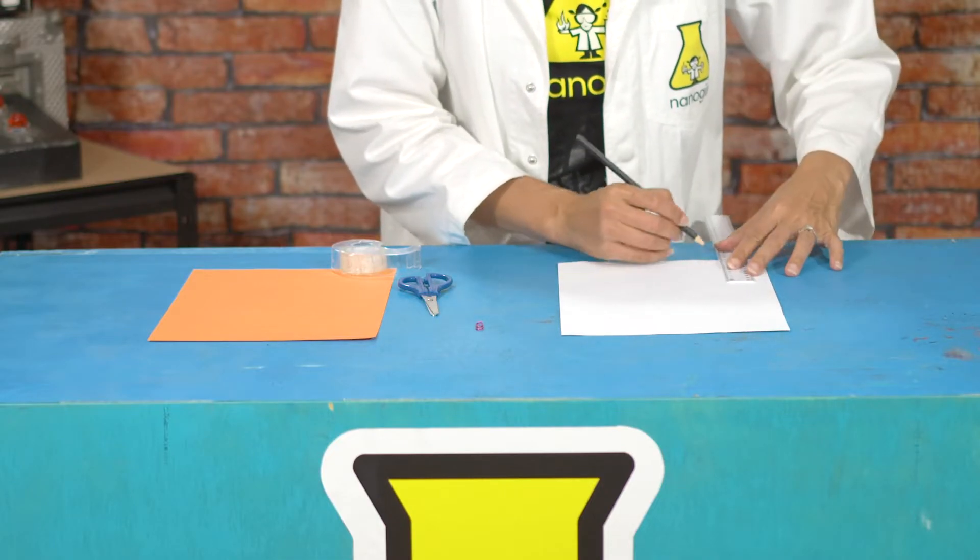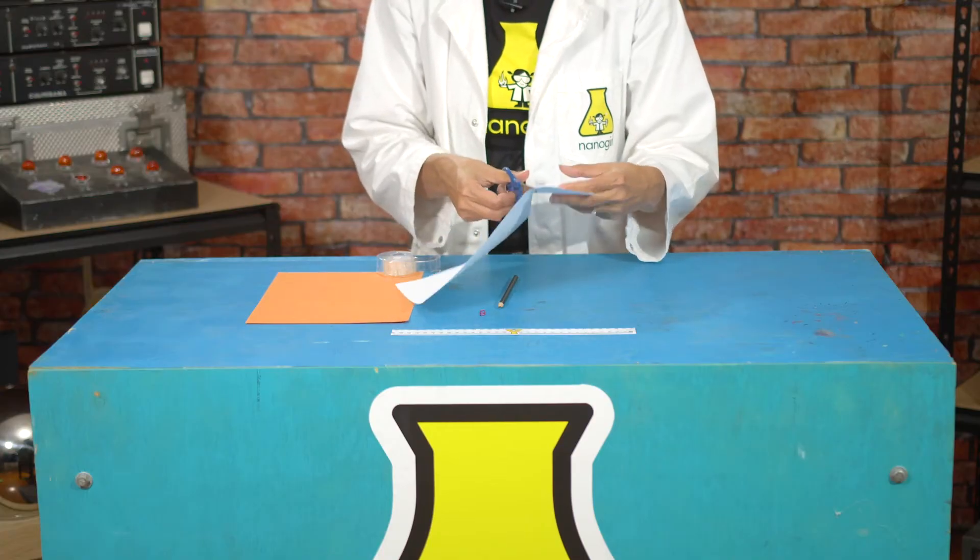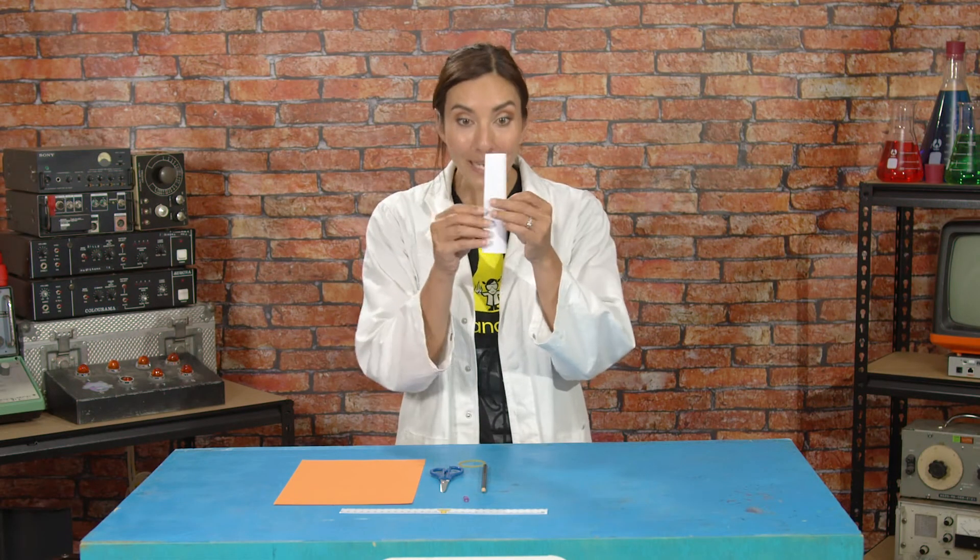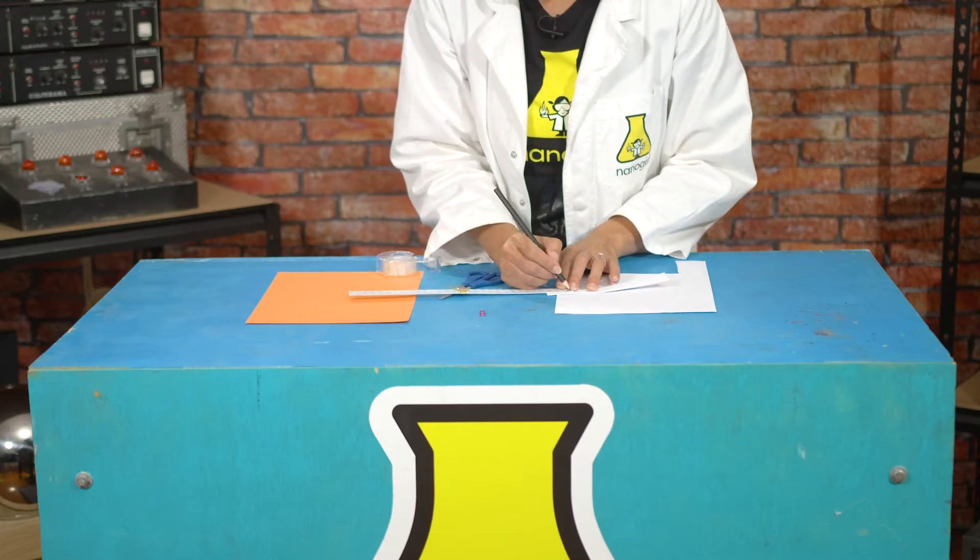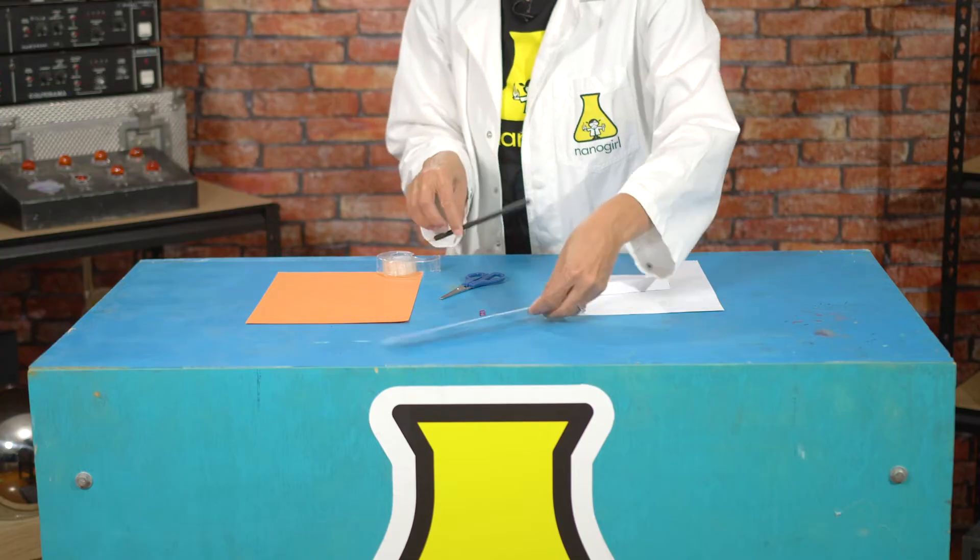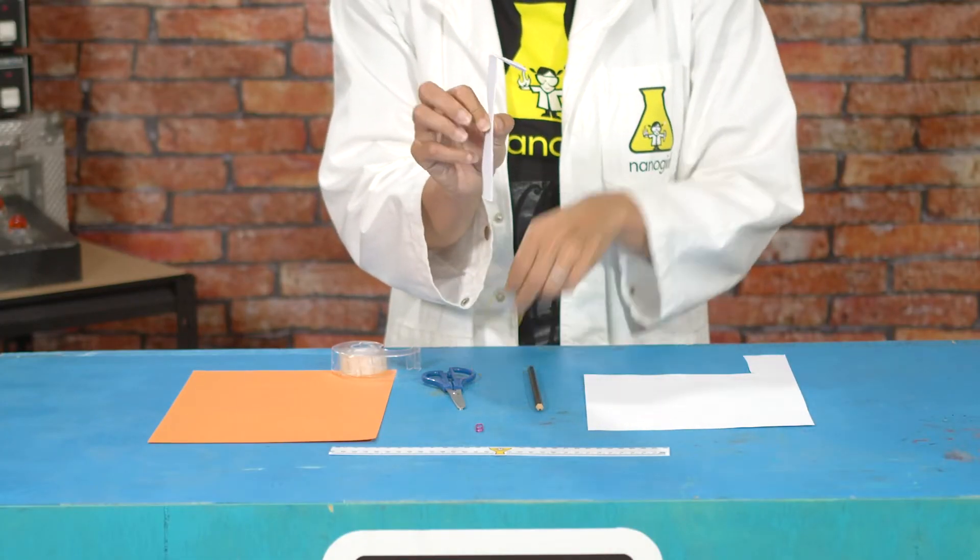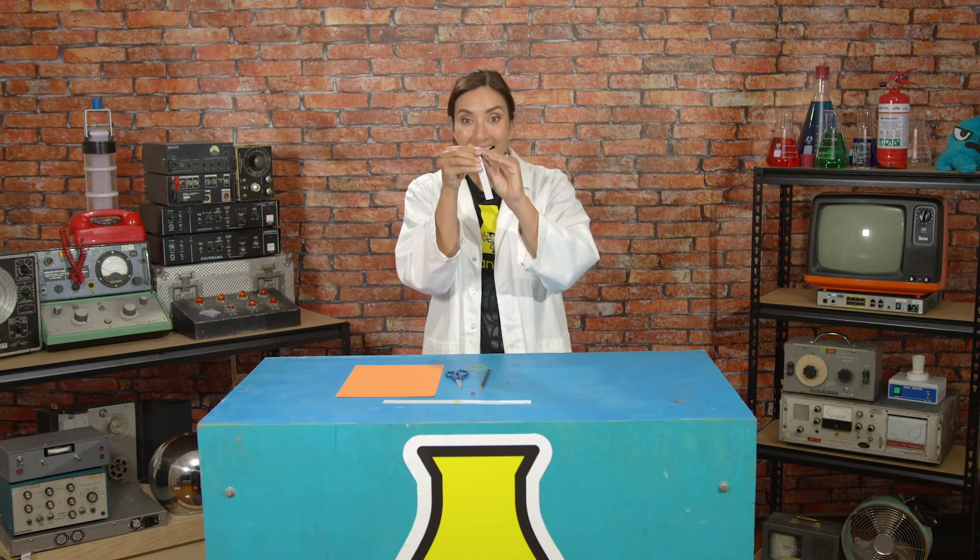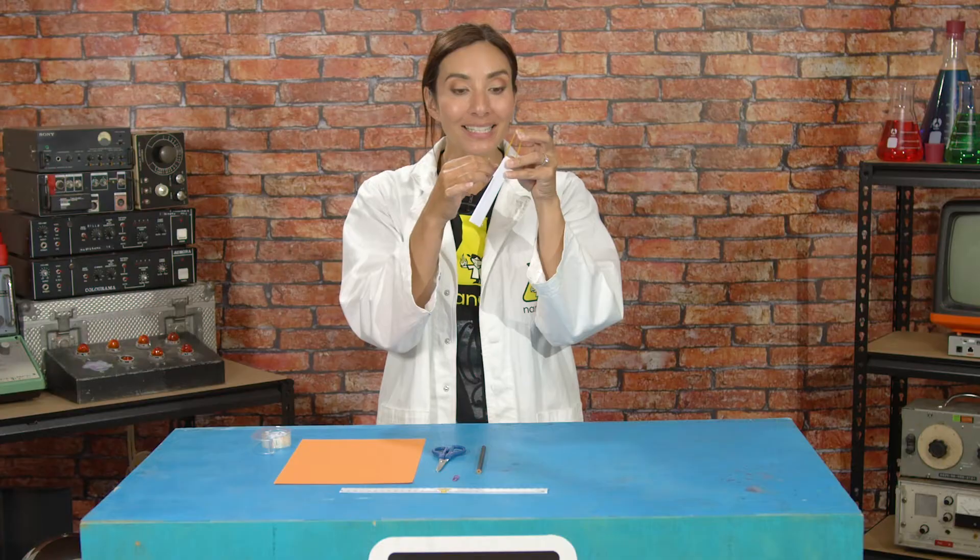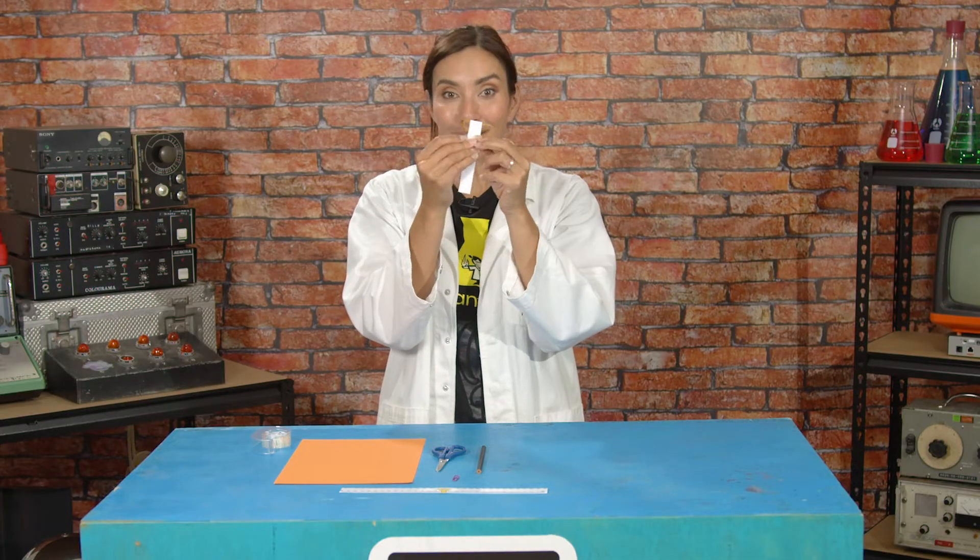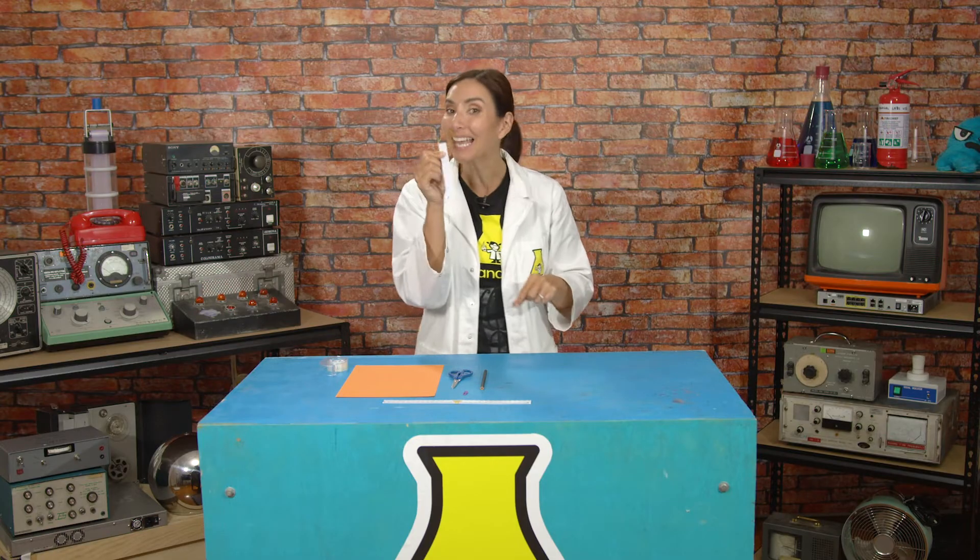Fold it in half to make it narrower and then in half again. Now measure about 3 centimeters from one end, then fold your paper back at that point and you'll make a hook. Place your elastic band into that hook and then tape it so that it's sealed in there. This is going to be our launch mechanism and we're basically making a catapult.